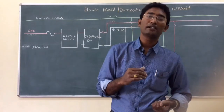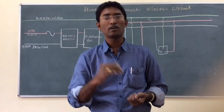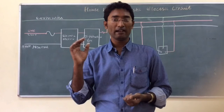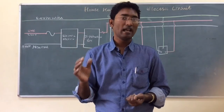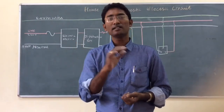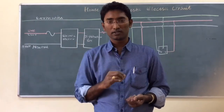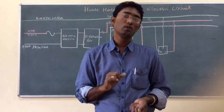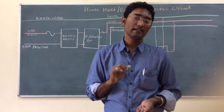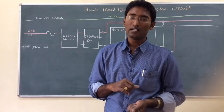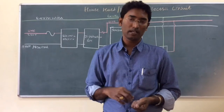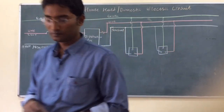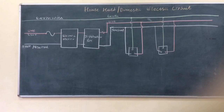In the domestic electric circuit there can be two types of connections: separate connections are carried out for high-powered appliances like refrigerators and air conditioners, and another type of circuit is used for low-powered electrical appliances.